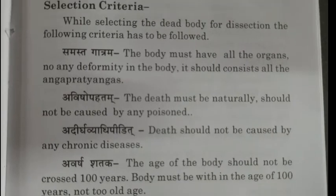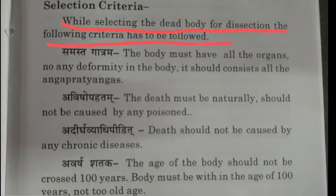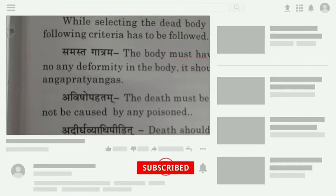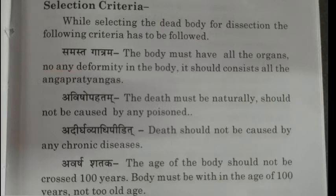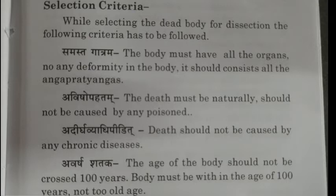Let's discuss the selection criteria. While selecting the dead body for dissection, the following criteria must be followed. The first is Samasthagatram, which means the body must have all the organs with no deformity or damage — it should consist of all the Anga Pratyangas, meaning all body parts. The next is Avisha Patham, which means death must be natural and should not be caused by any poison. Next, Adhirga Vadipit means death should not be caused by any chronic disease — the person should not have suffered disease for a long time.